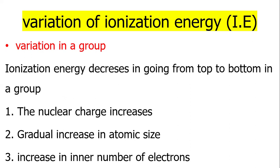In variation in our group, ionic energy decreases in going from top to bottom in our group. The nuclear charge increases, with a gradual increase in atomic size and increase in the number of electrons.